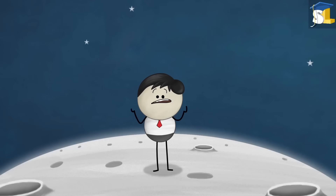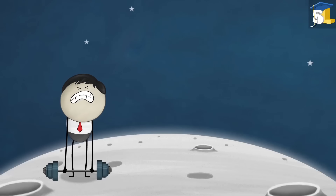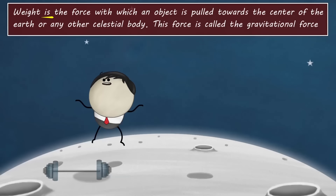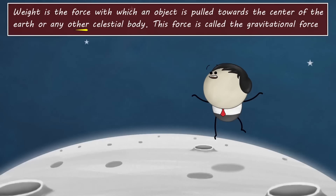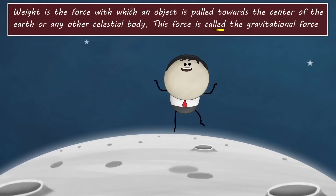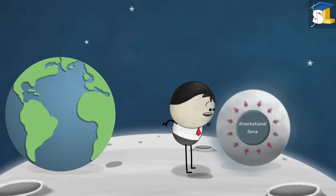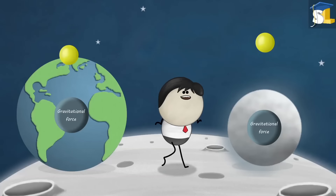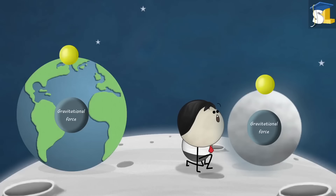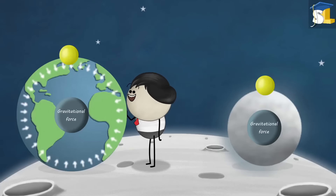Do you know why you weigh less on the moon? To understand this, we need to first learn about weight. Weight is the force with which an object is pulled towards the center of the Earth or any other celestial body. This force is called the gravitational force. Greater the gravitational force exerted by the celestial body, more will be the weight of an object present on it. So does this mean that the moon exerts less gravitational force than the earth?